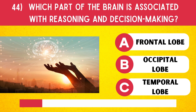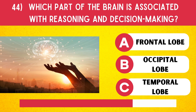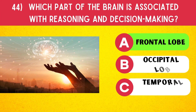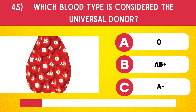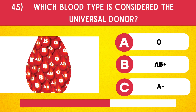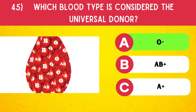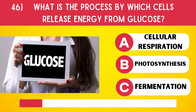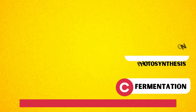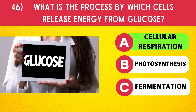Which part of the brain is associated with reasoning and decision-making? Frontal lobe. What is the process by which cells release energy from glucose? Cellular respiration.